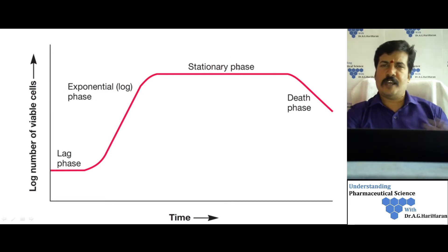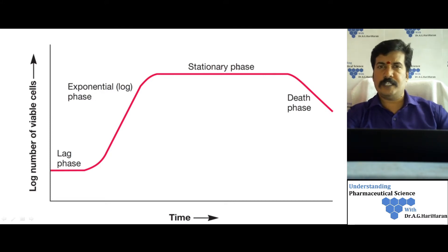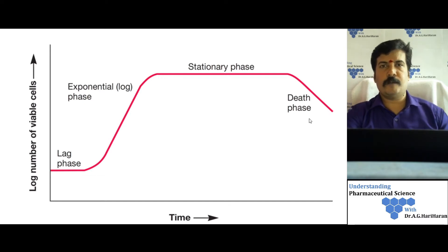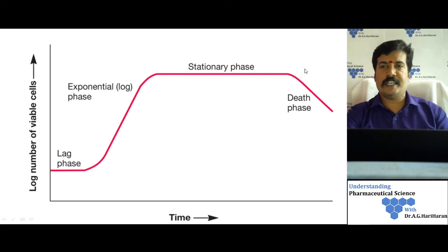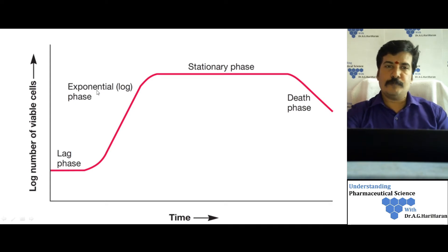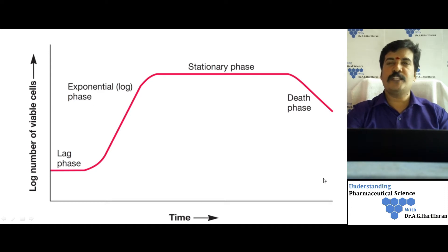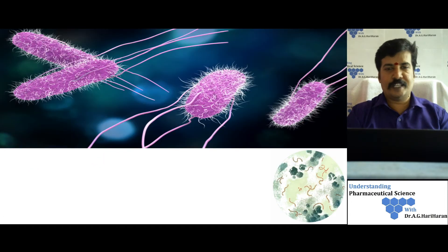After the stationary phase, nutrients are completely depleted and toxic metabolites start accumulating, causing cells to begin dying — this leads to the death phase. Most of the mathematical calculations are done in the exponential phase to calculate the mean generation time as well as the mean growth rate constant.